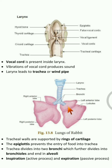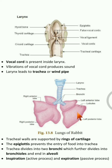The two bronchi enter inside the lungs and divide into numerous branches called bronchioles. The bronchioles end in air sacs called alveoli. In the alveoli, actual diffusion takes place — oxygen from the breathed-in air enters the bloodstream, and carbon dioxide from the bloodstream enters the lungs through the alveoli.